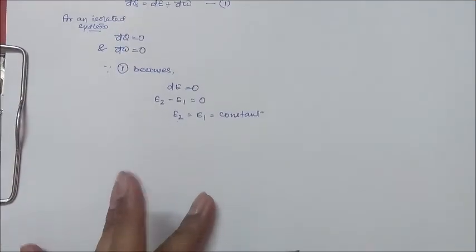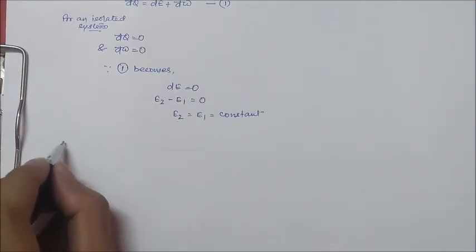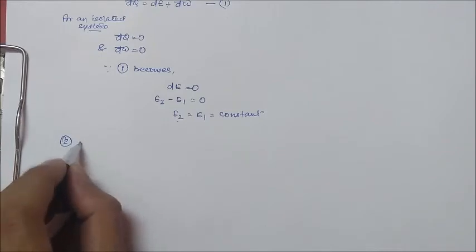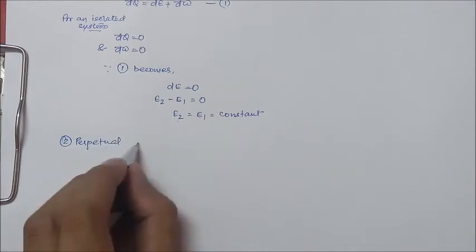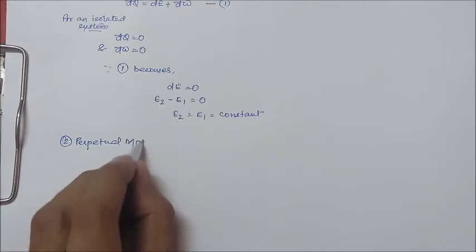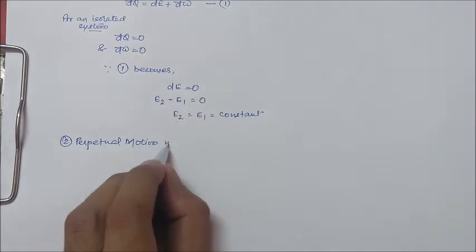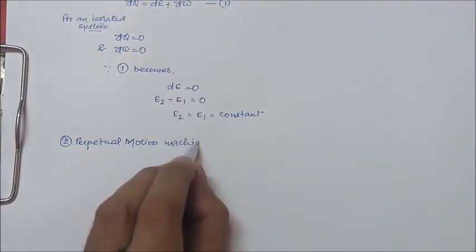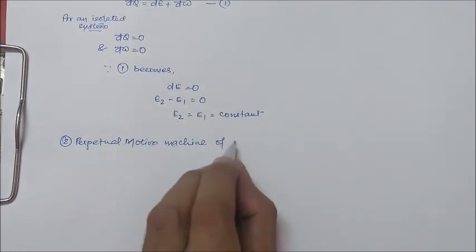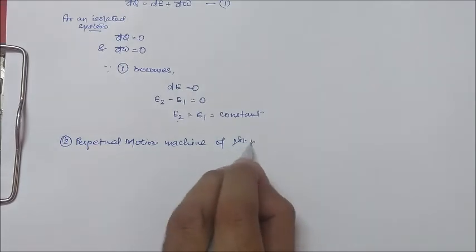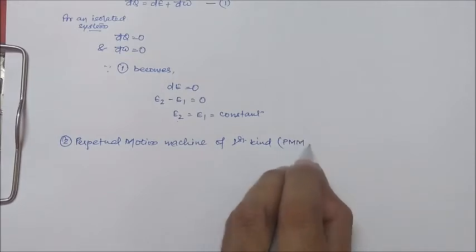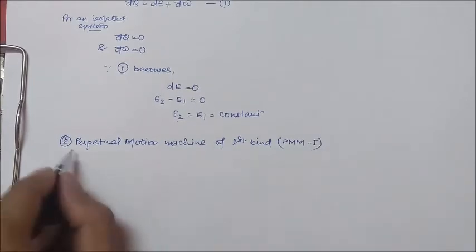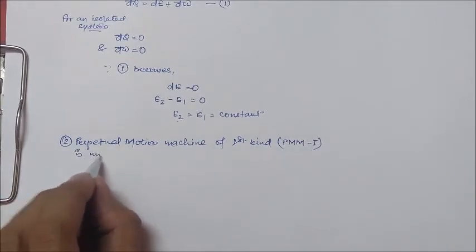The second thing which we are talking about is perpetual motion machine of first kind which is also known as PMM1 is impossible.